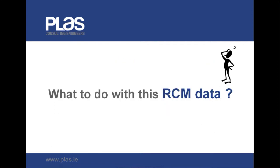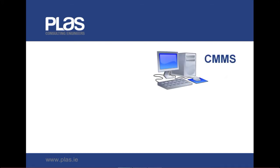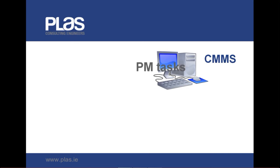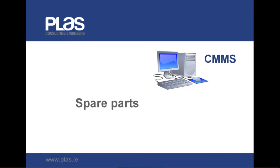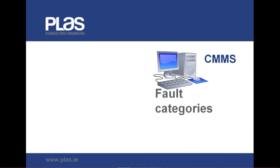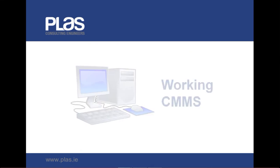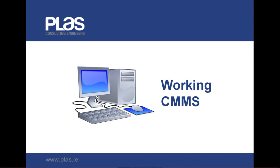You might of course at this stage be wondering what to do with all of this data. The smart thing to do is to use the RCM output data to set up a Computerized Maintenance Management System, or CMMS. The CMMS setup can be done most efficiently and effectively by preparing suitably structured data tables and loading these directly into the database that is behind every CMMS. Then you can have an effective and efficient maintenance system that works for the business.